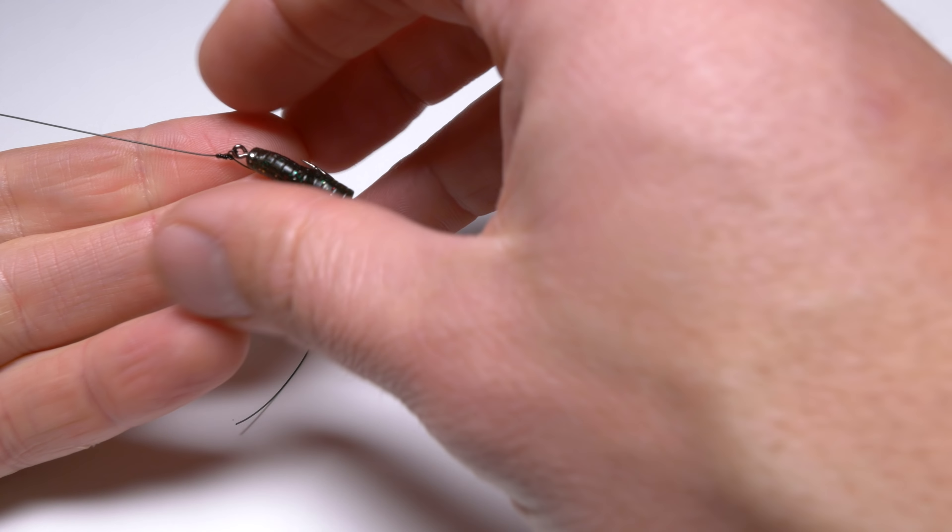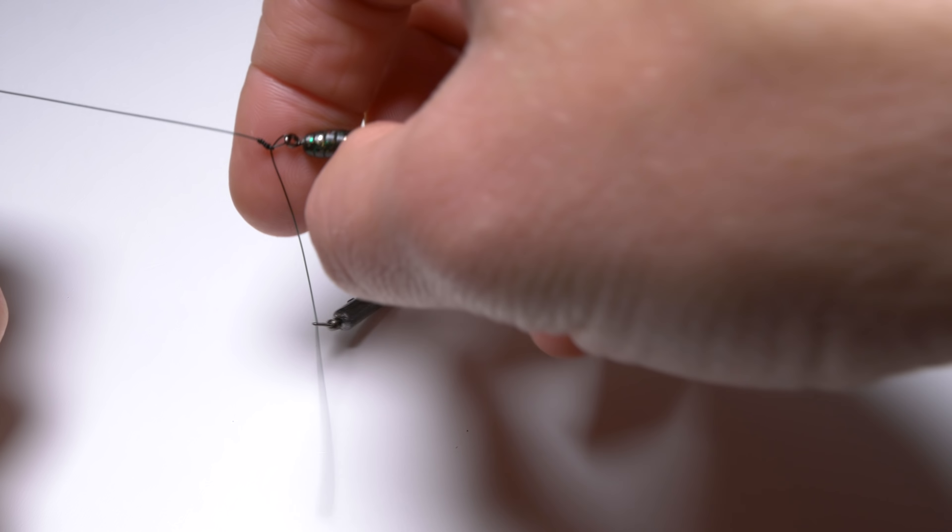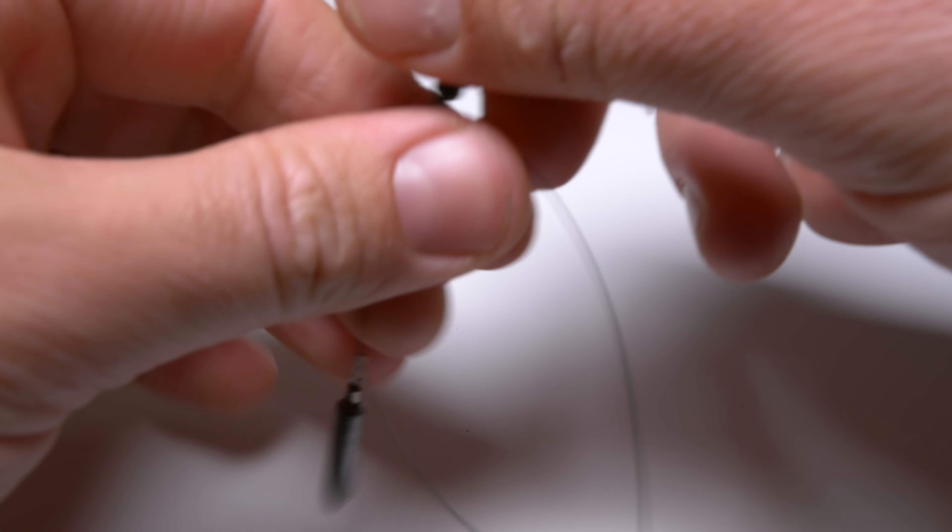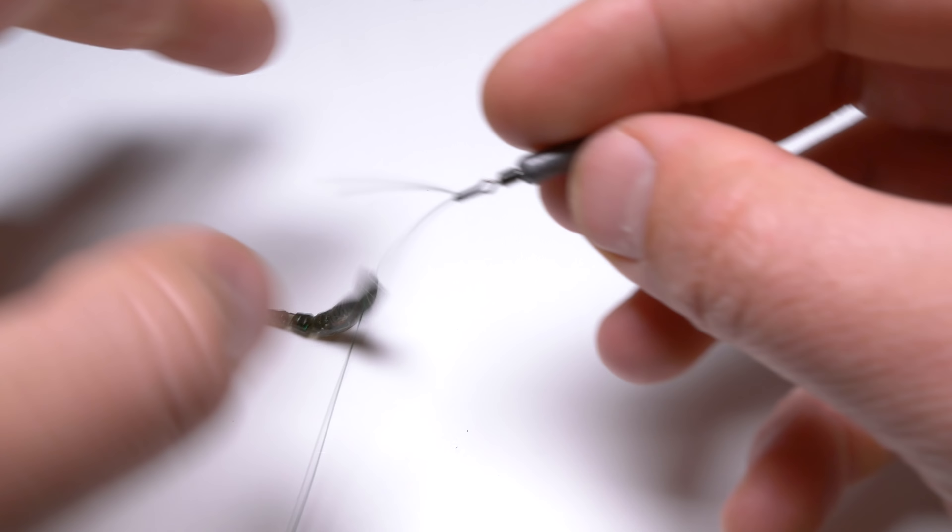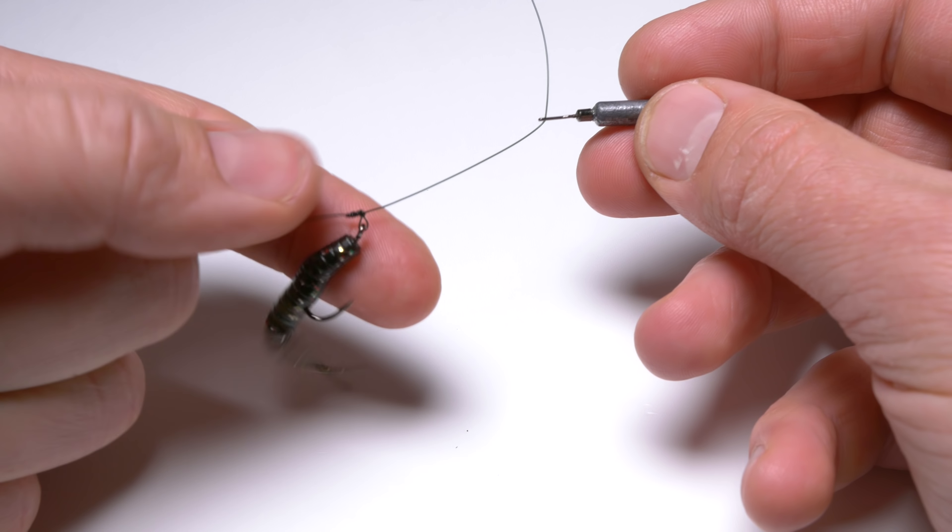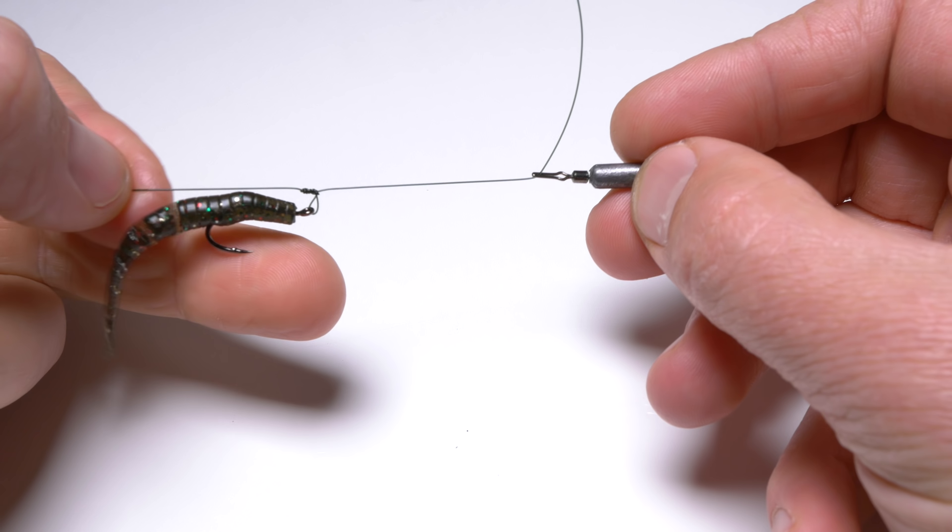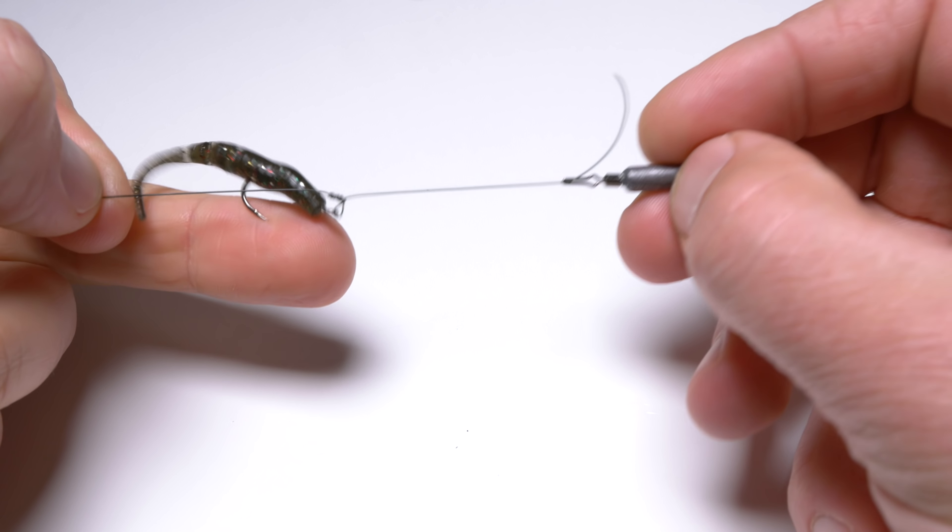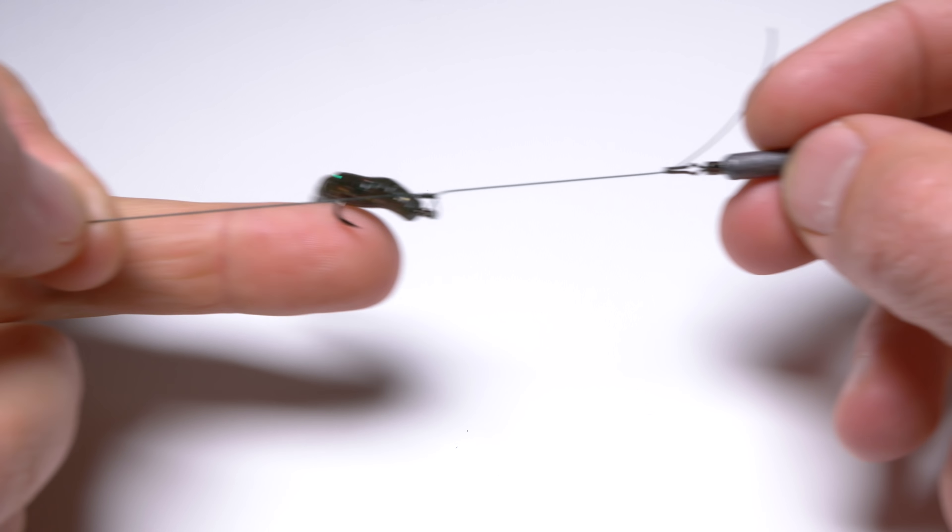And also, when the fish grabs it, the hook will be able to move and hook the fish. And also, this rig has better aerodynamic properties because when you will be casting it, the lure and the hook just will be in line with the direction where the lead is dragging it.